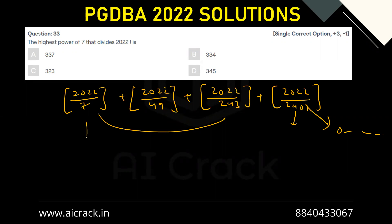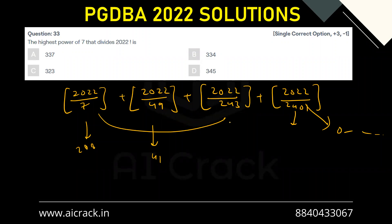Solving these: GIF(2022/7) = 288, GIF(2022/49) = 41, and GIF(2022/343) = 8. The total is 288 + 41 + 8 = 337. So option A, 337, is the correct answer.